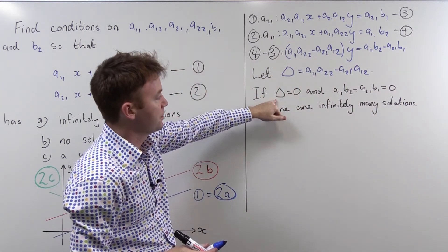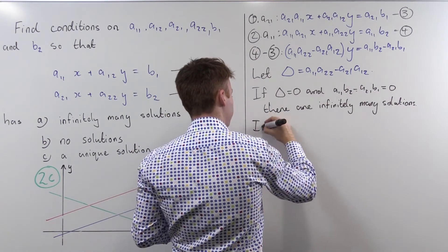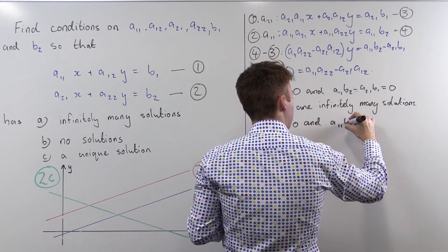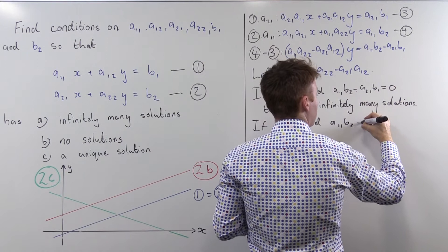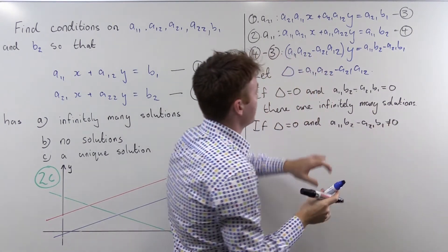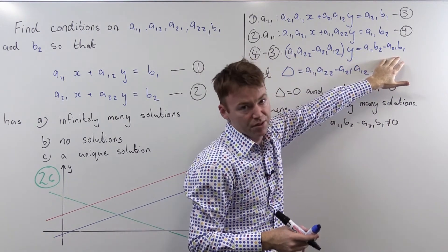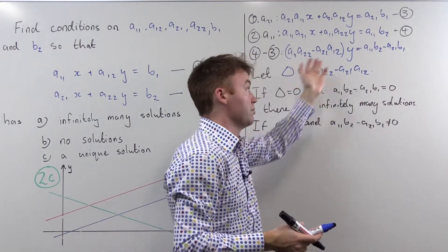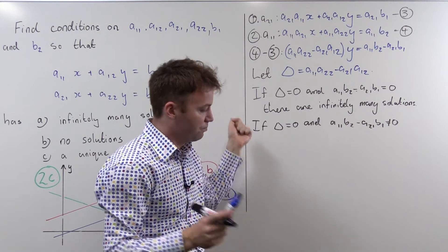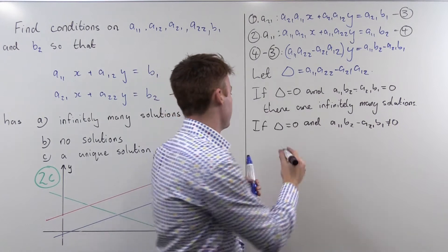Let's see what happens if delta is zero and this quantity here is not zero. Then we've got trouble, zero is not equal to zero, because what this equation here is telling us is that zero equals something that's not zero such as zero equals one. This is your classic scenario where you've got a contradiction, zero equals one, which means these two lines do not intersect. So there is no solution.